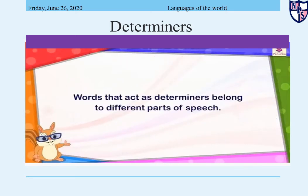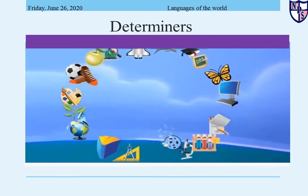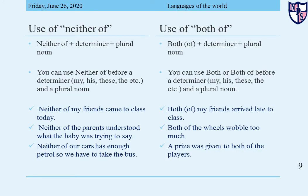Words that act as determiners belong to different parts of speech. Use of 'neither of': the formula is 'neither of' plus determiner plus plural noun. You can use 'neither of' before a determiner such as my, his, these, the, etc.